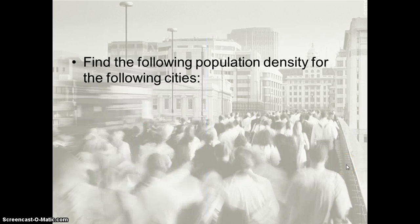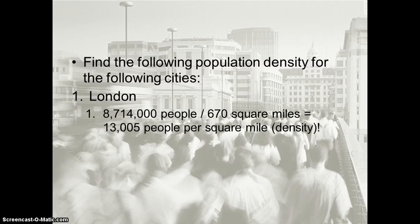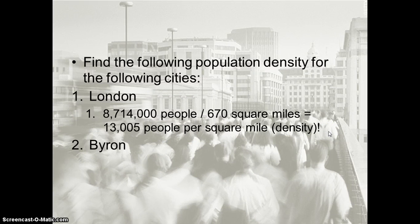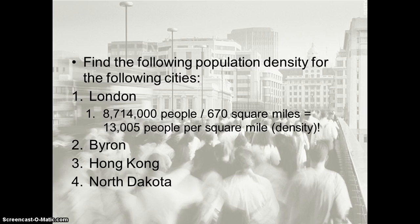Take the time to practice finding population density for the following cities. For London, England: 8.714 million people divided by a land mass of 670 square miles gives approximately 13,000 people per square mile. Now look up the population density of the city of Cairo, the city of Hong Kong, and the state of North Dakota — you'll get drastically different numbers. These are things that geographers study in locating how many schools, water and sewer treatment plants, and other resources are necessary.